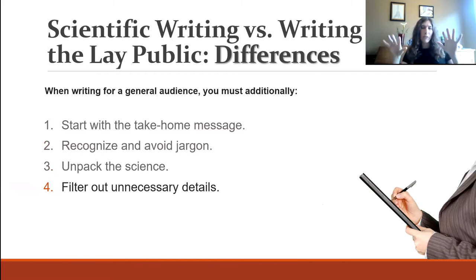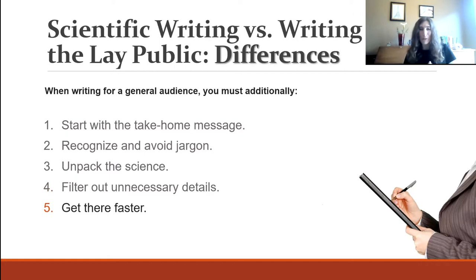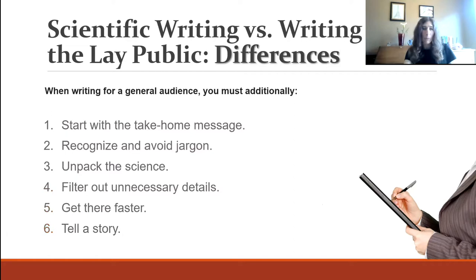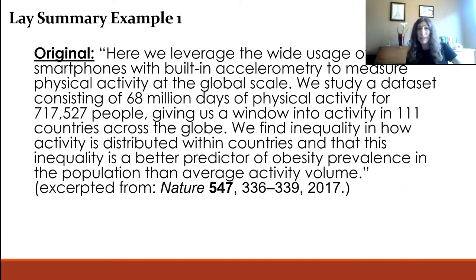Another key difference: filtering out unnecessary details and precision. Letting go of those details is hard if you're a scientist, but that's a lot of what it means to write for a general audience. You also have to get to the point faster — you can't meander through A, B, C, D. Trust your reader: even a non-scientific audience is intelligent and can infer a lot. You've got to trust them and not hold their hand.